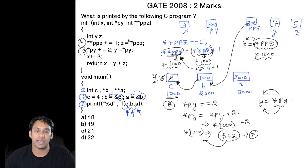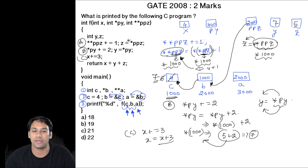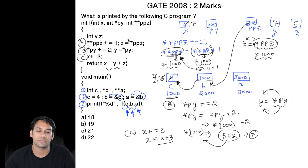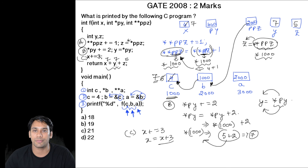In statement C, we have x += 3, meaning x = x + 3. The value stored in x is 4, so incrementing by 3 gives x = 7. In the return statement, we return x + y + z. The value of x is 7, y is 7, and z is 5. So 7 + 7 = 14, and 14 + 5 = 19. This function returns 19, and the printf statement prints 19. Therefore, option B is correct.